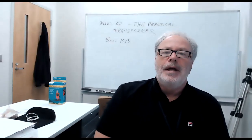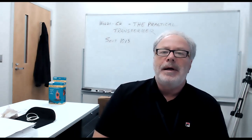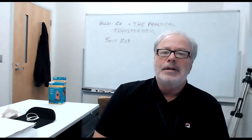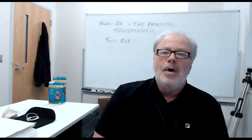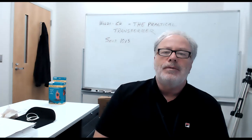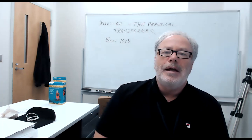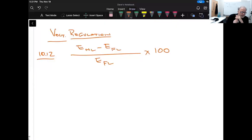Section 10.13 is called voltage regulation. It's defined in terms of the secondary voltage because the primary voltage is held constant. Voltage regulation looks at the difference between the no-load secondary voltage and the loaded secondary voltage — how well does the machine maintain voltage once current starts to flow. The basic equation is: voltage at no load minus voltage at full load, divided by the full load voltage, times 100, giving us the percentage of voltage regulation.